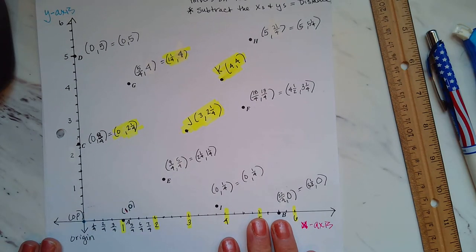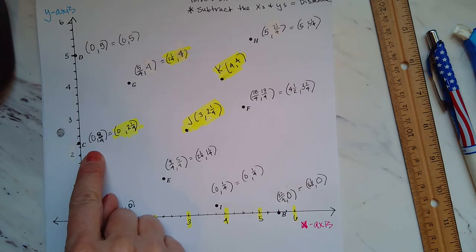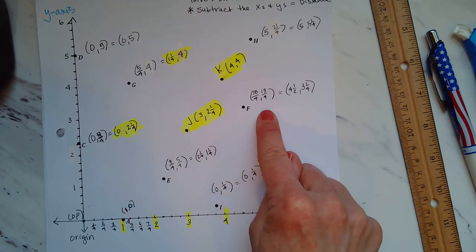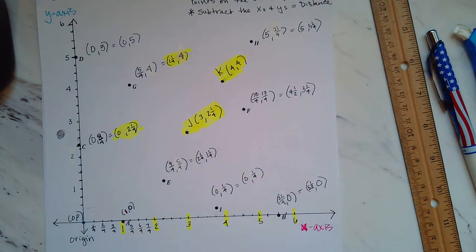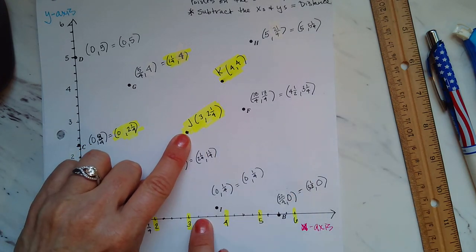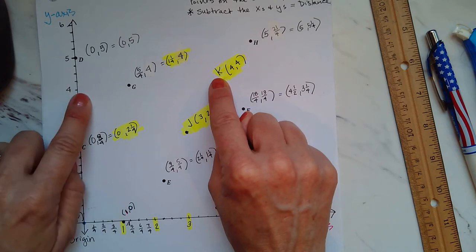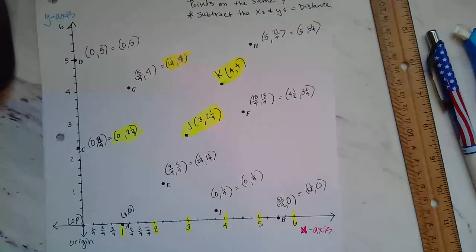Let's go ahead and check this. So we have A, we have B, we have C, we have D, we have E, F, G, H. Now I added two new points. I added J at three, over three, up two and a quarter. And I added K, which is four by four. Now if you have all of that plotted correctly, that's excellent.